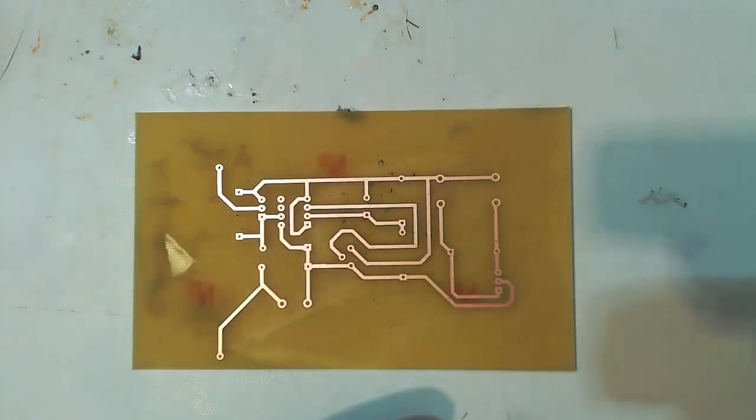As you can see, it comes right off. There are a few little traces left on the PCB. However, they're non-conductive, and they're not interfering with the traces, so it's not going to be a problem in the circuit.